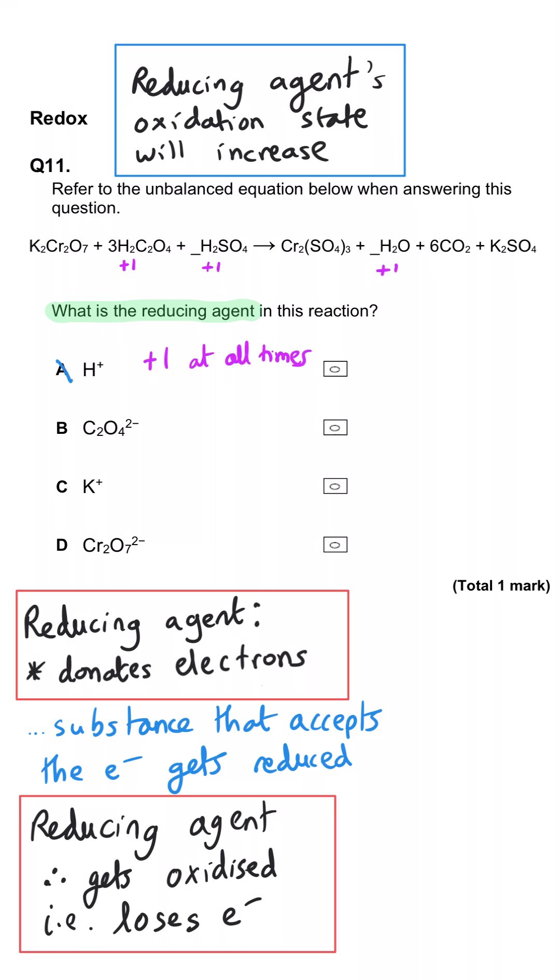So that hasn't even changed at all. Is it C2O4 2 minus? Well, in that substance, we've got four lots of minus two from the oxygen. And that means this must be balanced out with two lots of plus three from the carbon to give minus two overall.